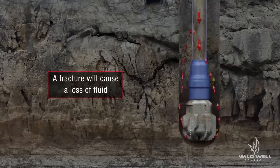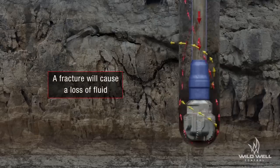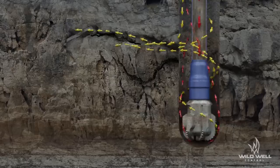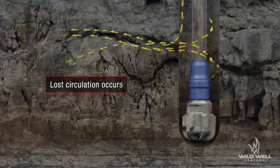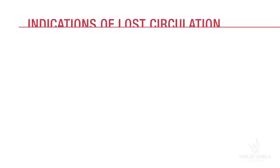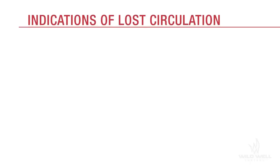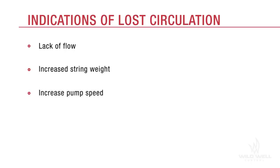A fracture in the formation could lead to a loss of drilling fluid to the formation. Whenever drilling fluid is lost to fractures in the formation, a situation called lost circulation occurs. The most obvious indication of lost circulation is no flow — the flow of drilling fluid across the shakers will stop. Other indications include when the flow indicator decreases to zero, an increase in string weight, or an increase in pump speed if the rig is not equipped with constant speed pumps.